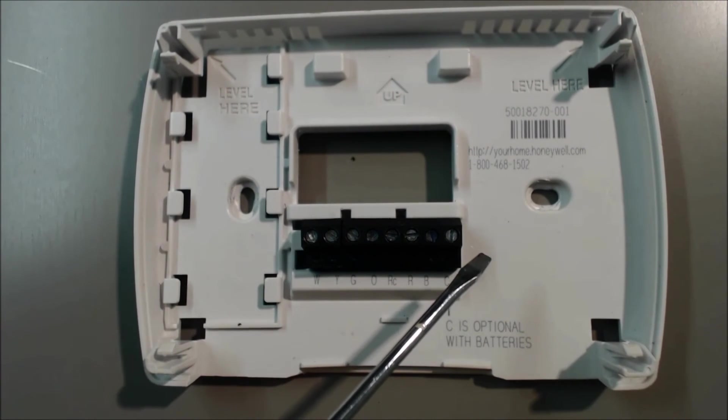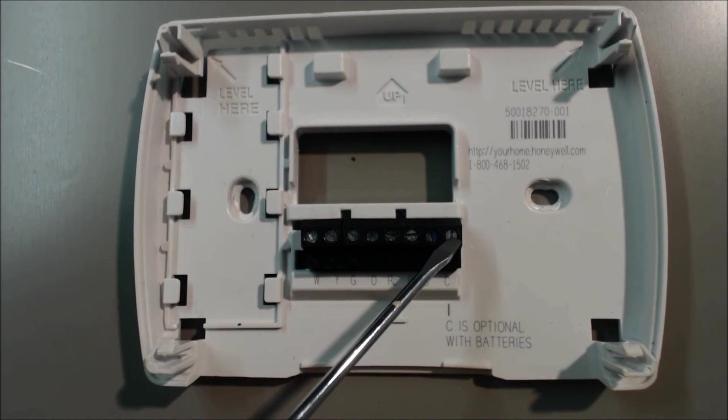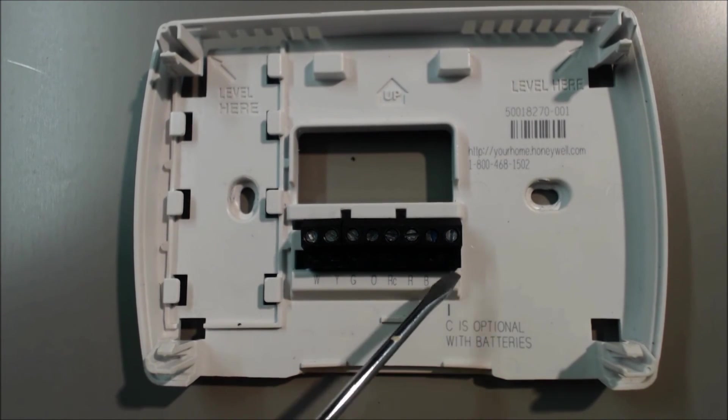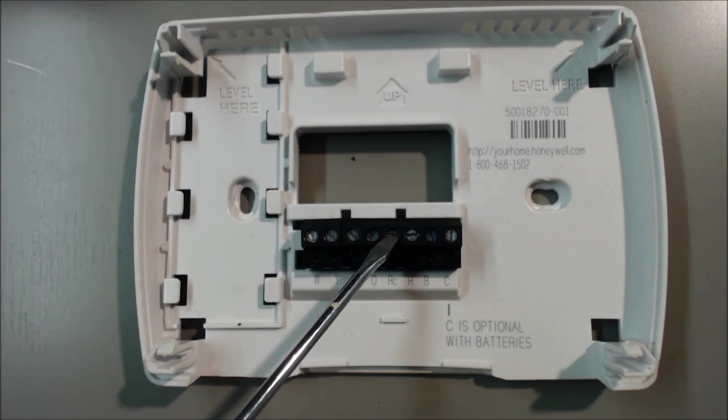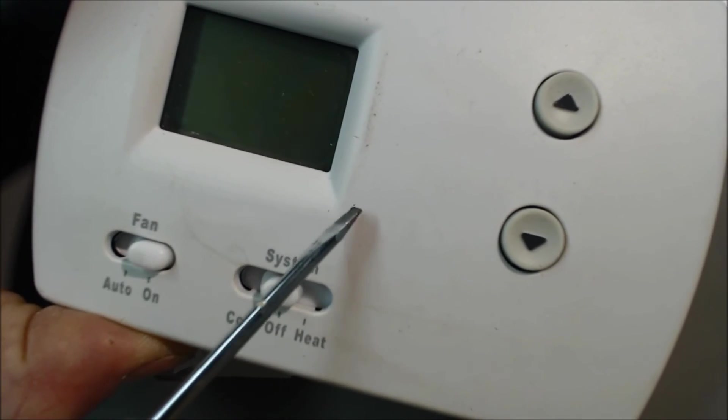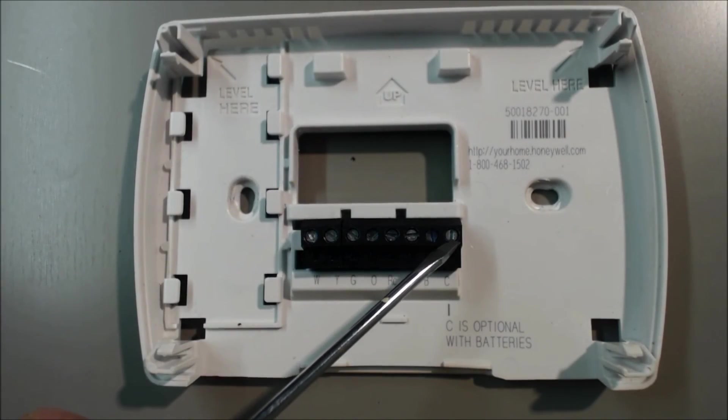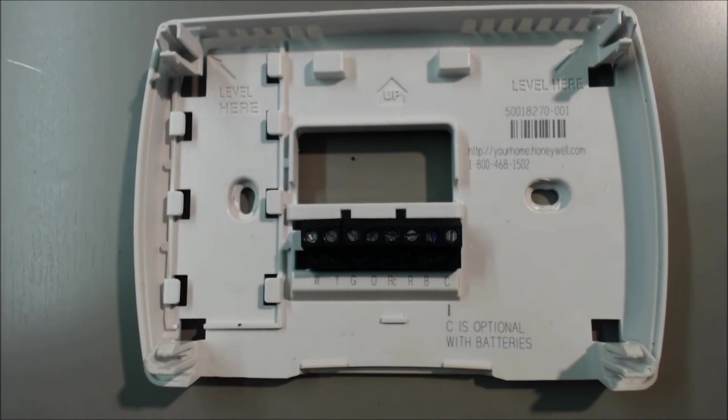At the air handler, if you want to power this by the air handler, then you would need another blue wire for the C. 24 volts comes in to RC, and then the circuit in here gets connected and lights up the LCD display and goes back out the C to the air handler.